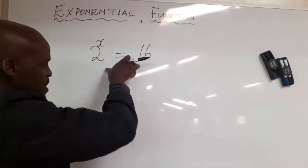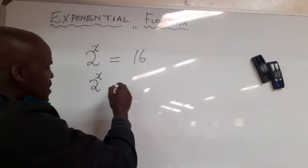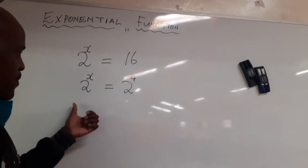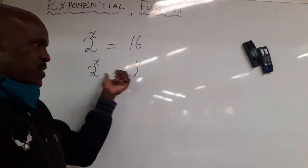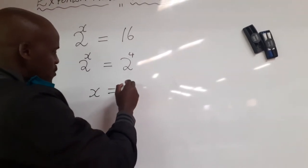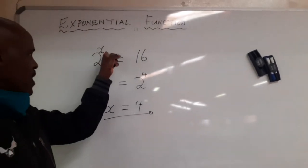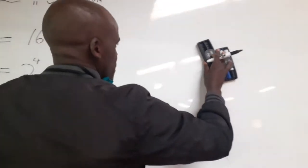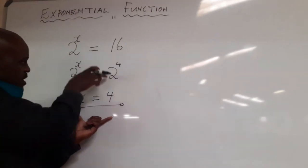We make the bases to be the same — it becomes 2 exponent x equals 2 exponent 4. Once the bases are the same, we equate the exponents. So our x here would be equal to 4. That's an exponential equation where x is an exponent. The most important thing is to change the bases to be the same and then equate the exponents.